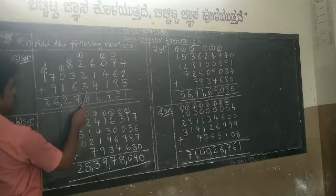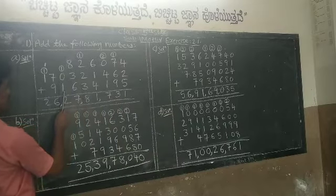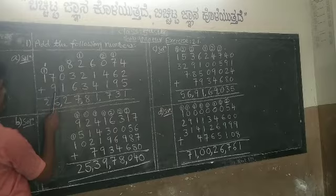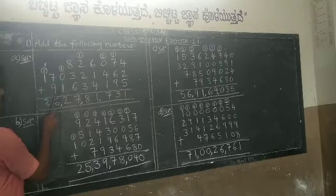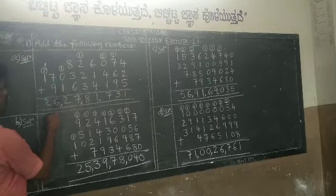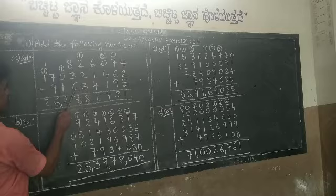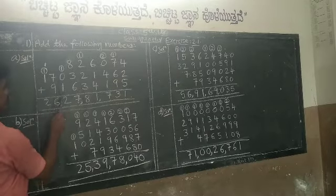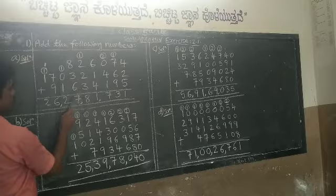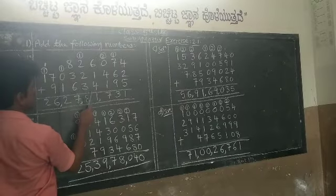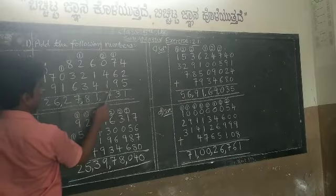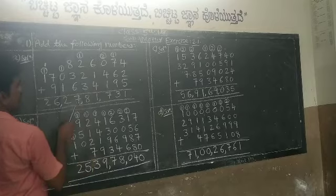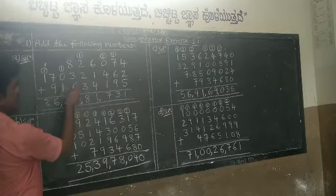To read the third number: 9 is in the crore place, so it is 9 crores; the next two digits combined make 16 lakhs, giving 9 crores 16,34,195. You have to add these three numbers.